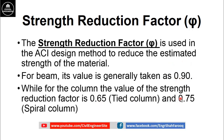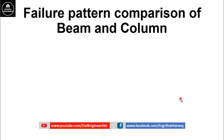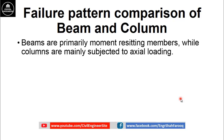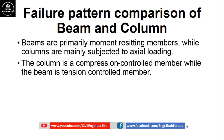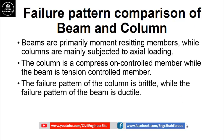Now, to understand why the strength reduction factor for beams is kept larger than that of columns, we will first discuss the failure pattern of beams and columns. We know that beams are primarily moment-resisting members, or flexural members, while columns are mainly subjected to axial loading, or axial compression loading. The column is a compression-controlled member while the beam is a tension-controlled member.